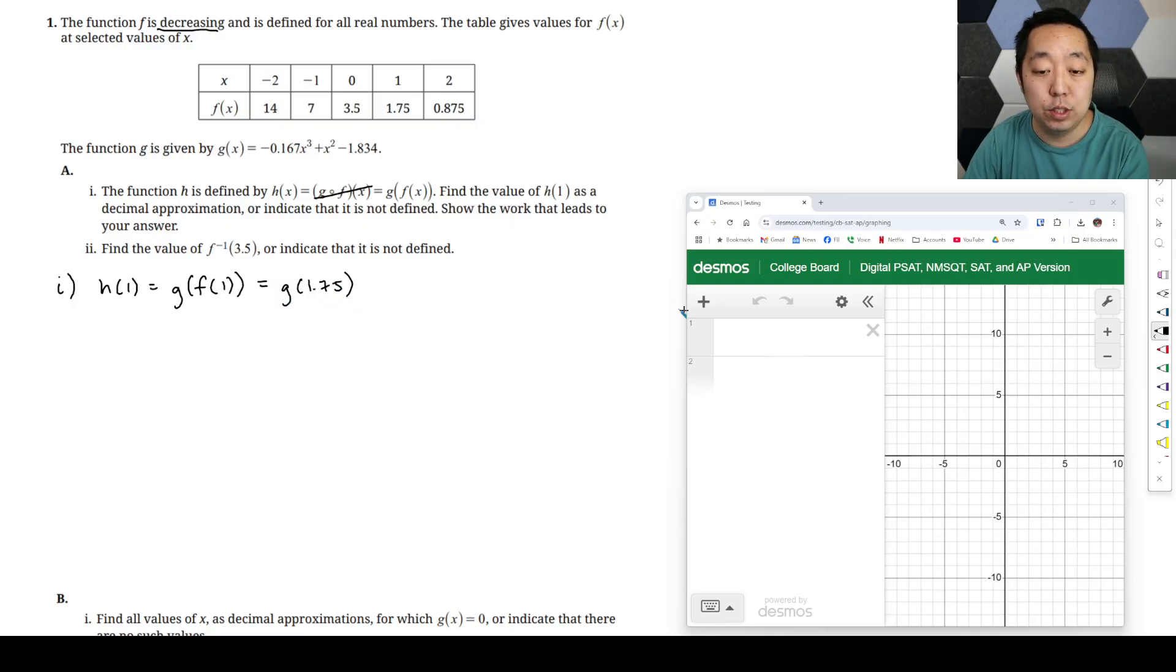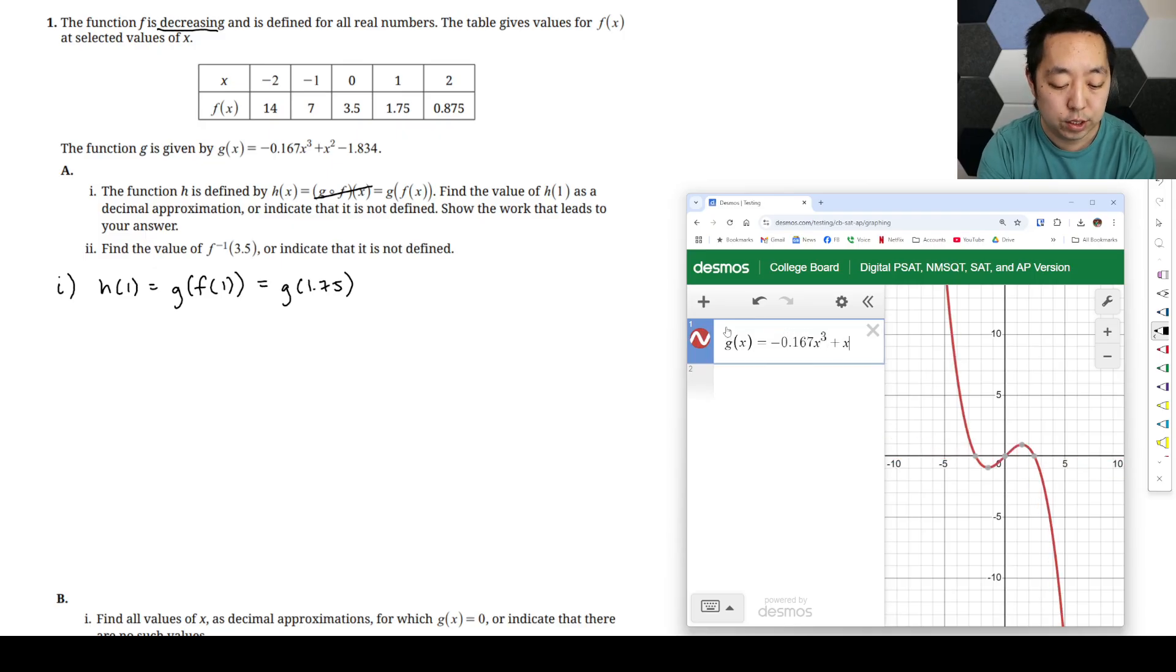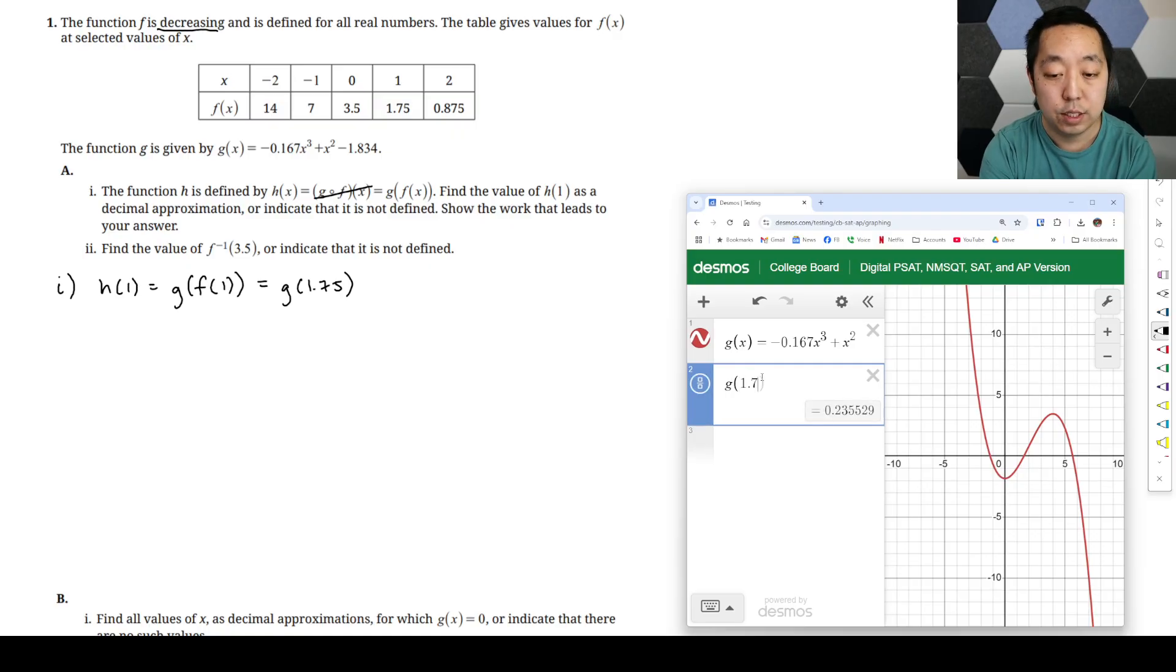And let's use Desmos to handle our definition of g of x here. It's negative 0.167 x cubed plus x squared minus 1.834 and we just need to compute g of 1.75. And that is going to give me 0.3335. I forget if they want three decimal places. I'm pretty sure it's usually three decimal places, but you can double check, but that's the right answer there.